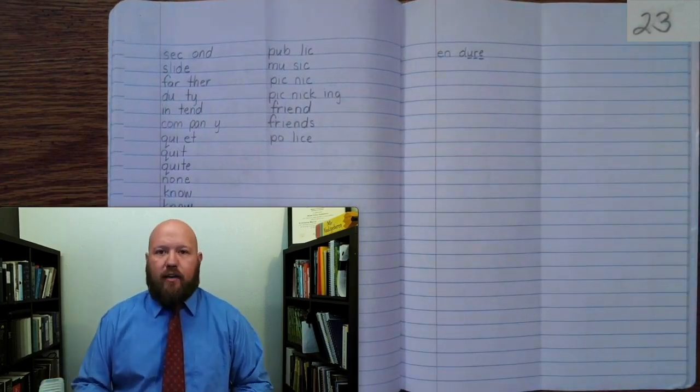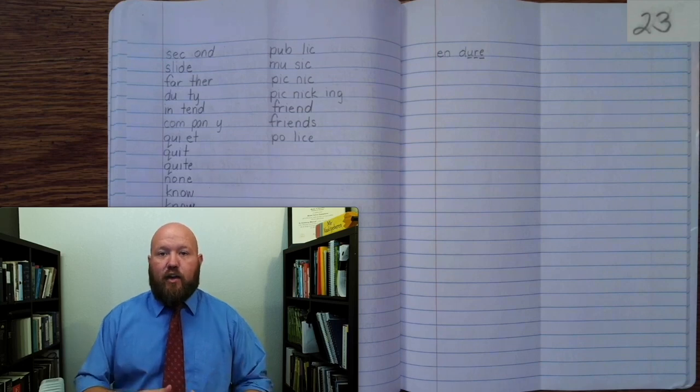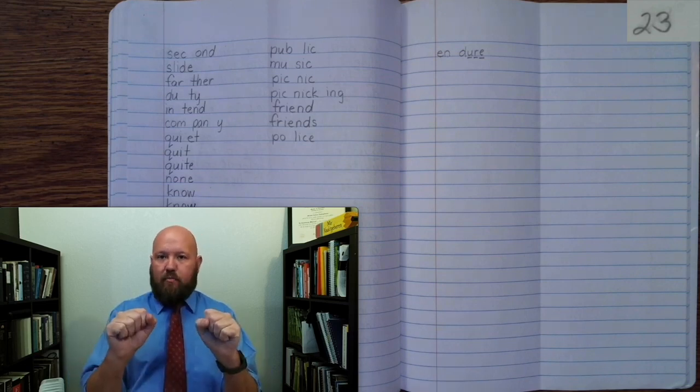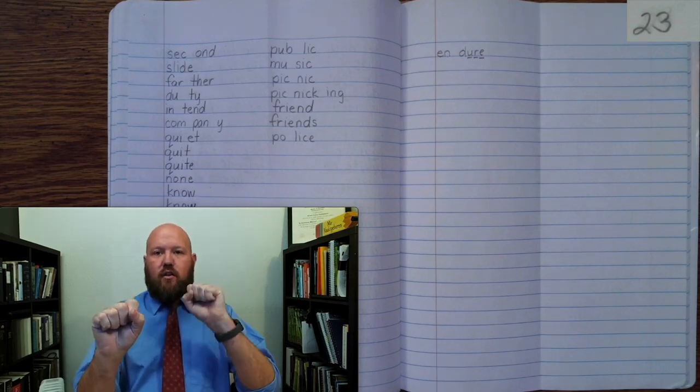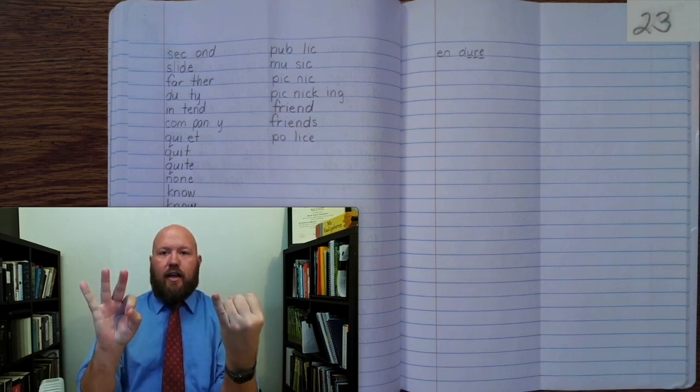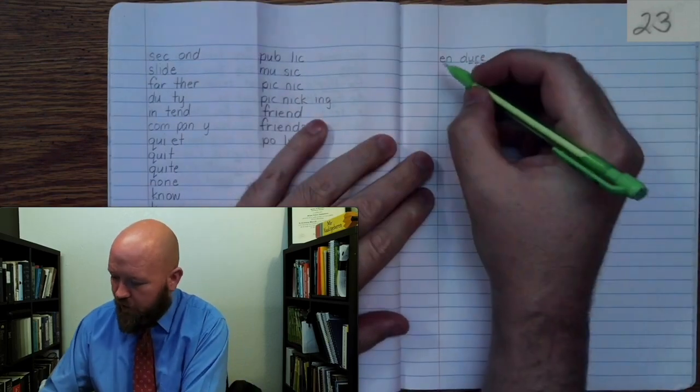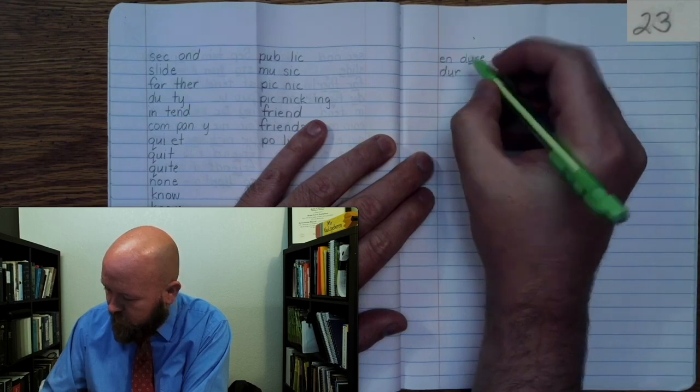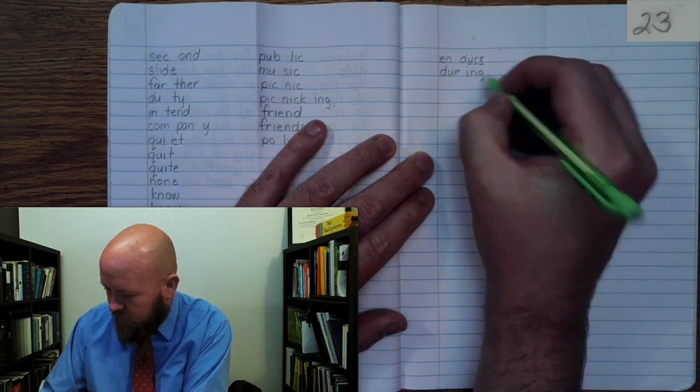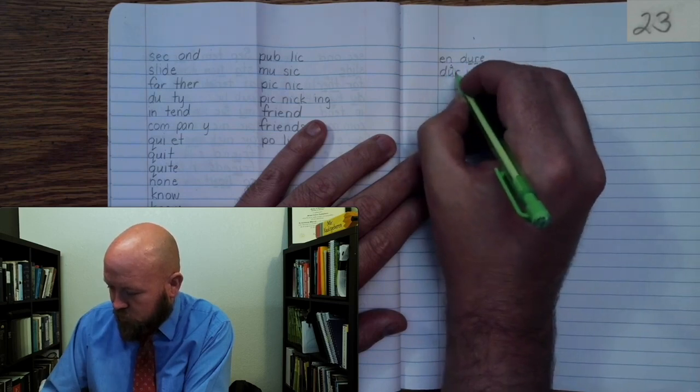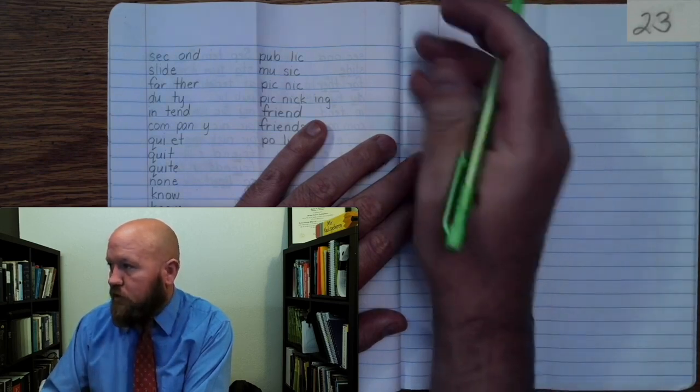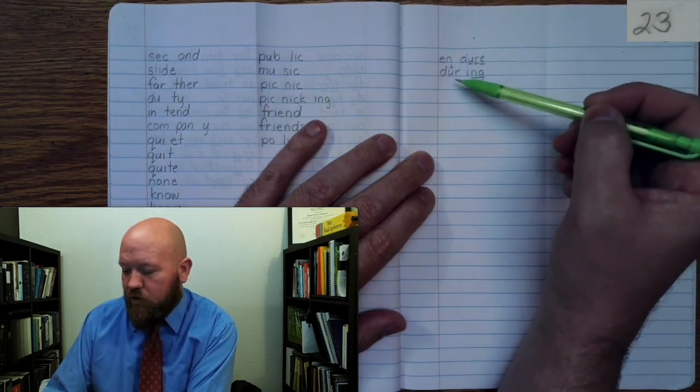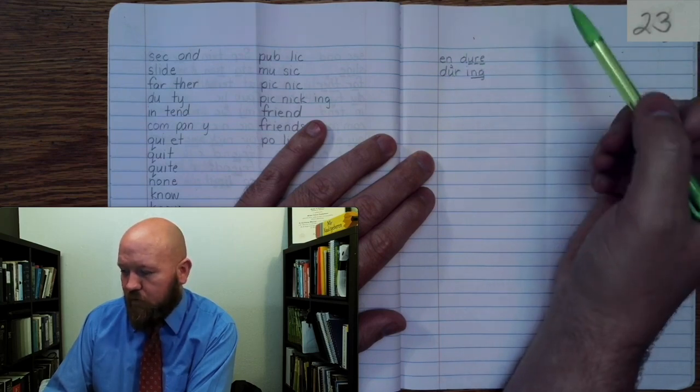The next word is during. When you're in the midst of something, you're doing it during it. I'm watching a show during my free time. During. Base word during. Dur-ing. D-U-R-I-N-G. During, once. So here, it's not that endure is the base word, but here we have a U. So just remember that here, during, it's going to have a U as well. And we'll brace these two.